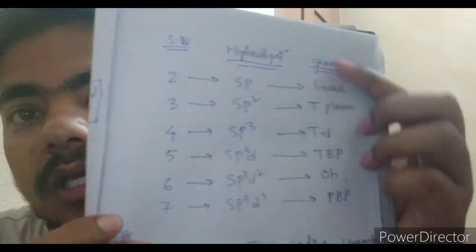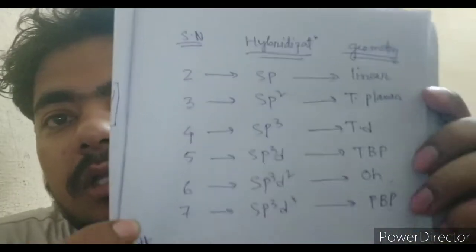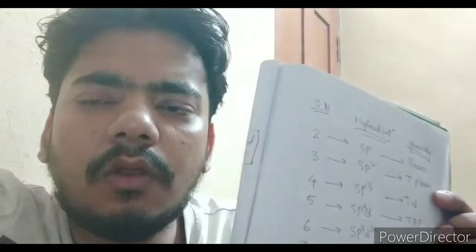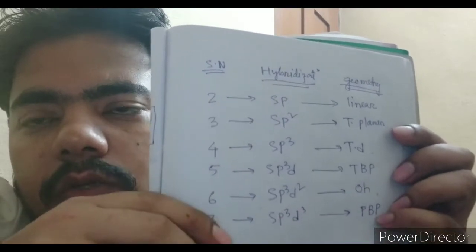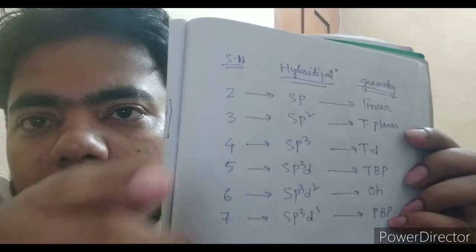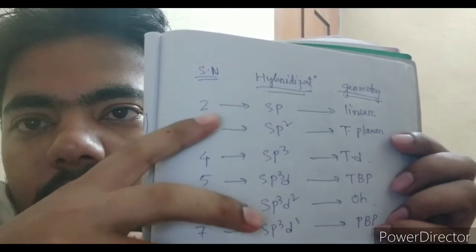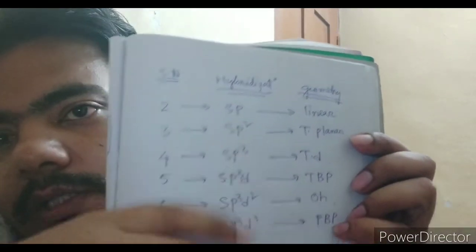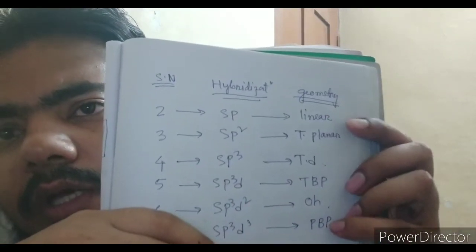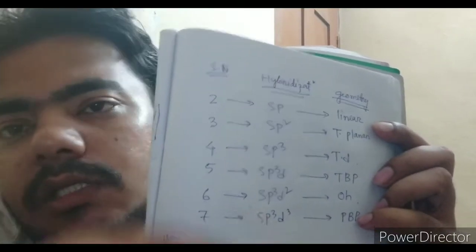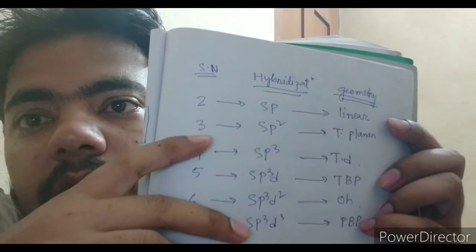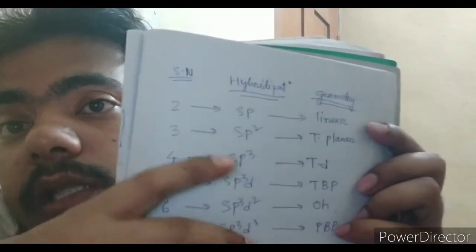I have written all the steric numbers with their hybridization, geometry, and shape. If the steric number is two, that is sp hybridization and the geometry is always linear. There is no lone pair involved here — it is directly sp hybridization and that is linear.